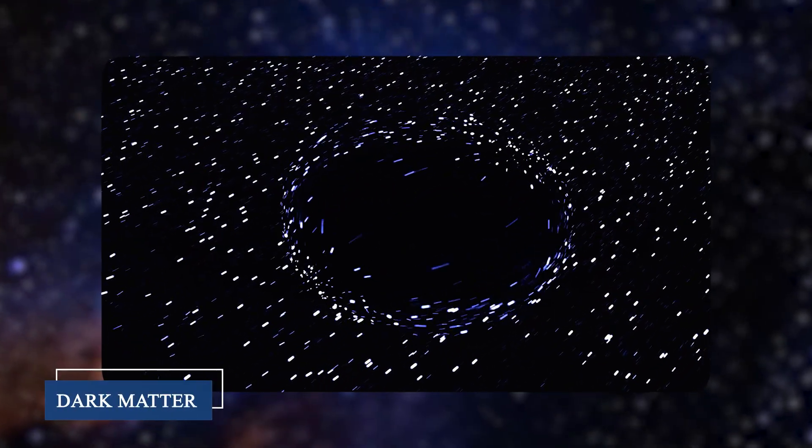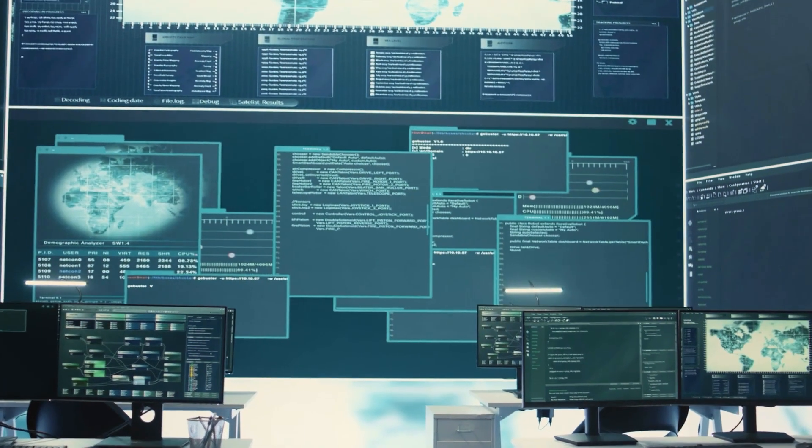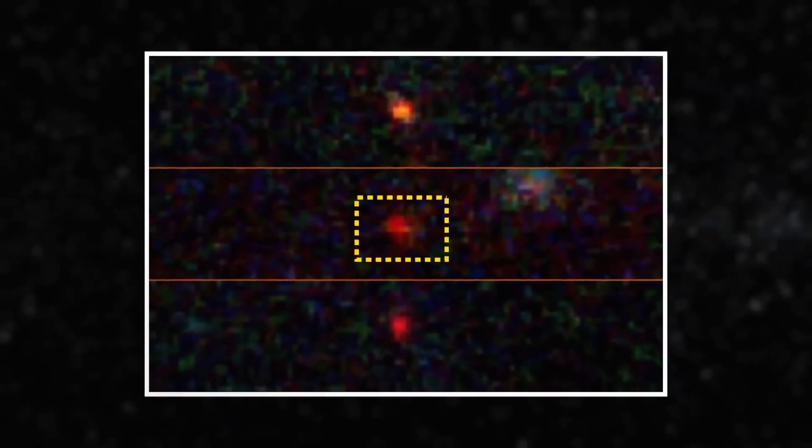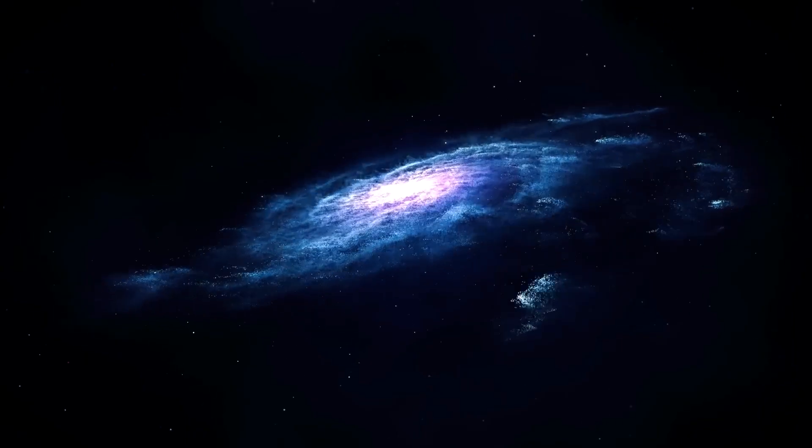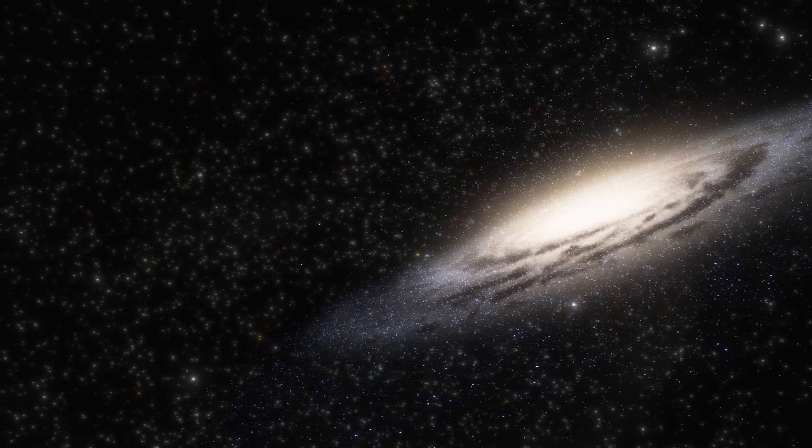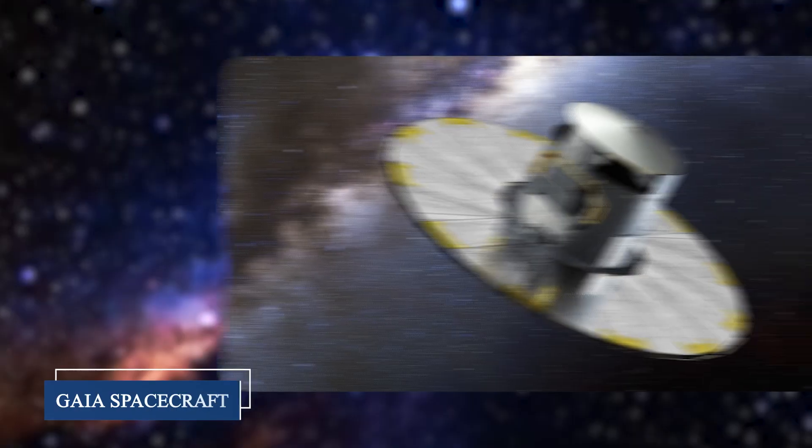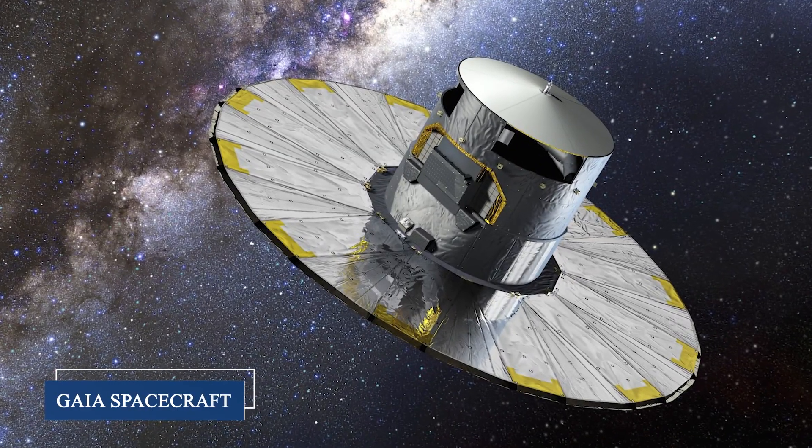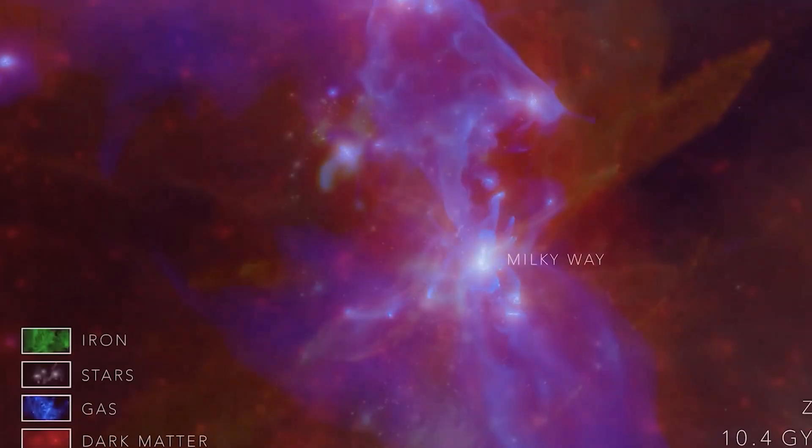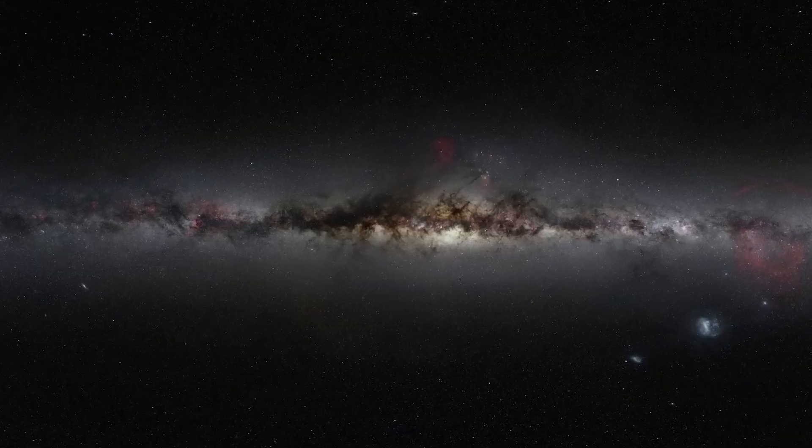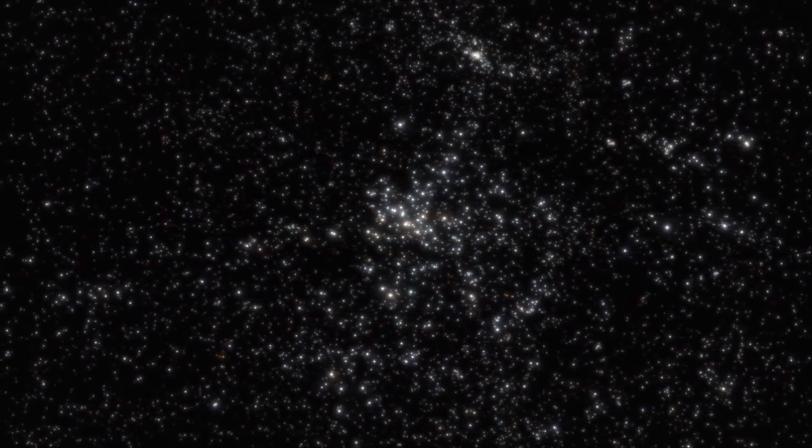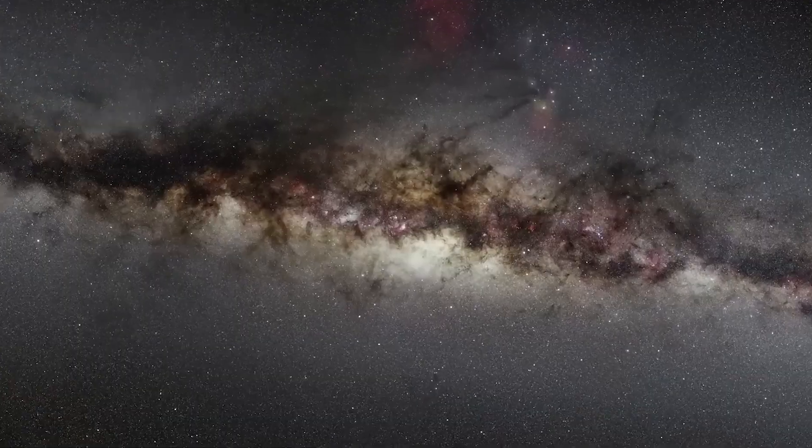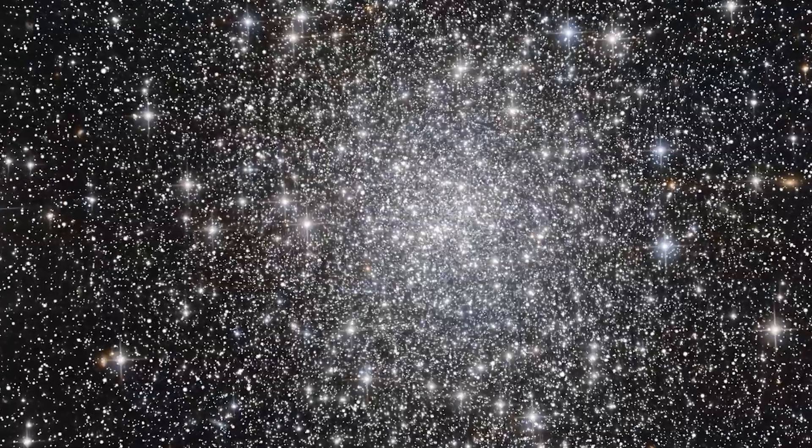But the real game-changer is what we're discovering about dark matter in these regions. Advanced computer simulations suggest that beneath our solar system, invisible currents of dark matter are flowing like cosmic rivers. These dark matter streams are the remnants of smaller galaxies that our Milky Way has consumed over billions of years. The Gaia spacecraft, which has mapped over a billion stars in our galaxy, has detected subtle wobbles in stellar motion that suggest these dark matter currents are real and actively flowing through our region of space. Some of these streams may be passing right through our solar system from below, carrying with them the gravitational fingerprints of ancient galactic collisions.